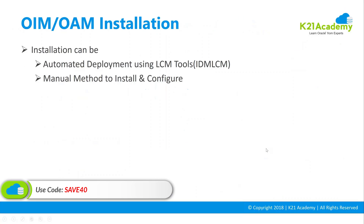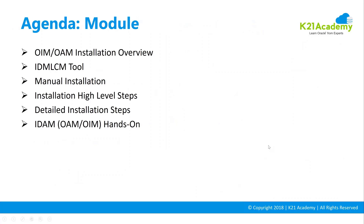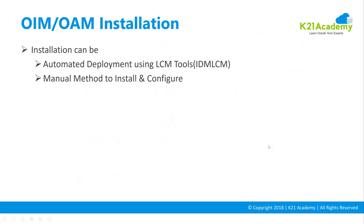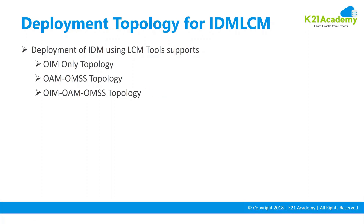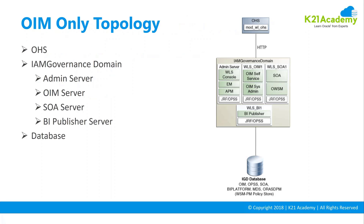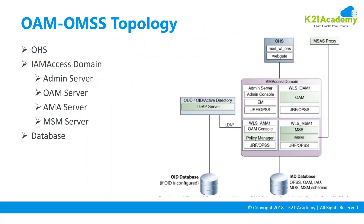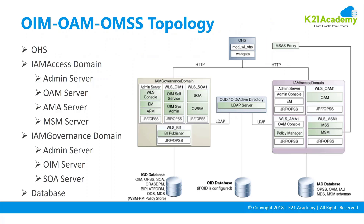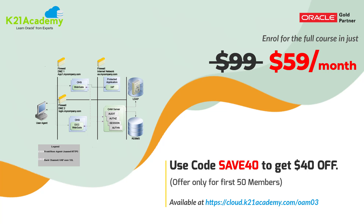Let me do a quick recap. We started with the agenda, then looked at installation — automated and manual. We looked at what the IDM-LCM tool is for, and then at topologies: Oracle Identity Manager topology, Oracle Access Manager topology, and combined OAM-OIM topology. Next, with this context, we are going to talk about the installation. We'll install everything and then decide whether to go with just Oracle Identity Manager, just Oracle Access Manager, or both. In the hands-on, we'll cover them individually, and if anyone wants to do advanced integration, let us know.